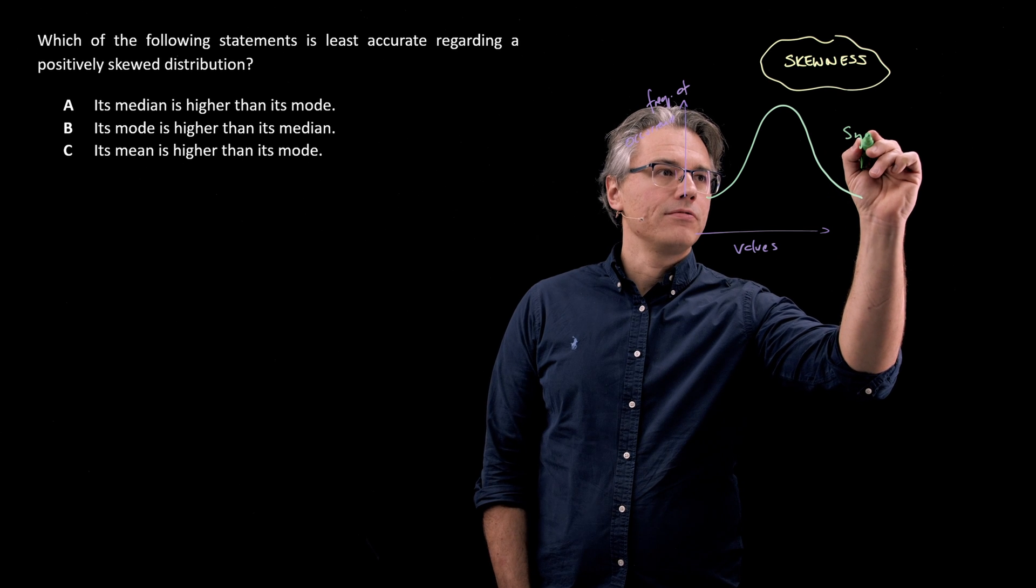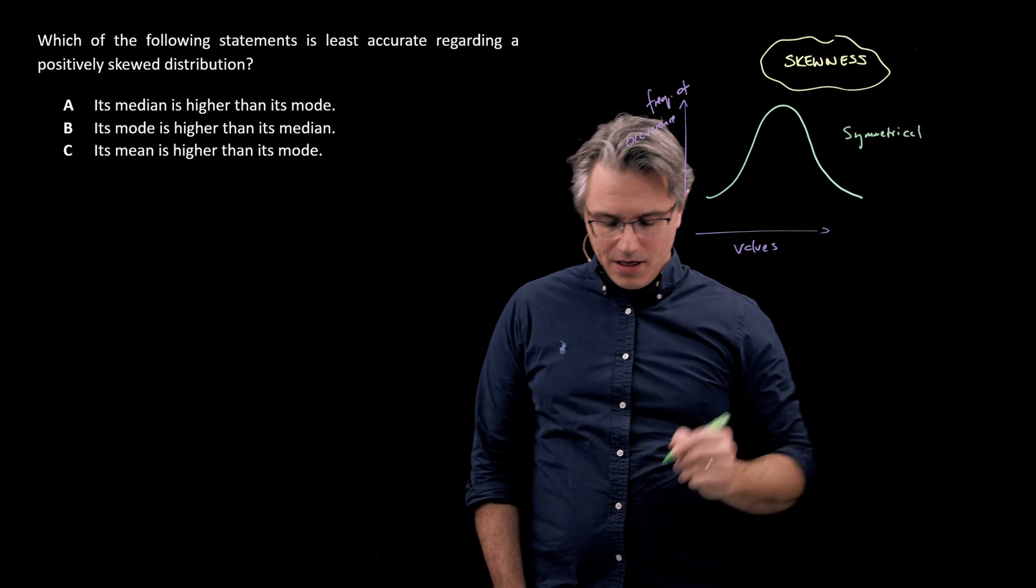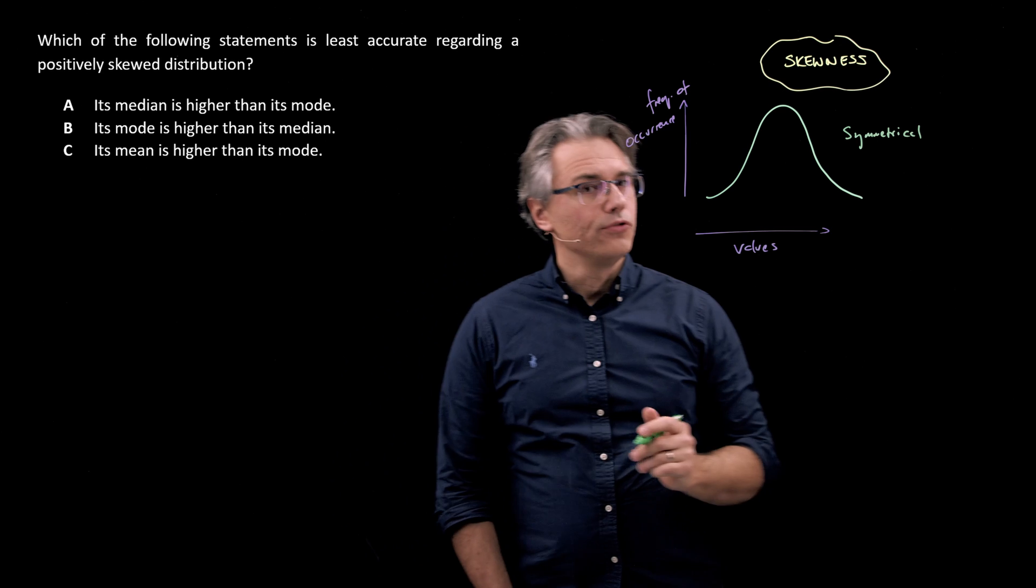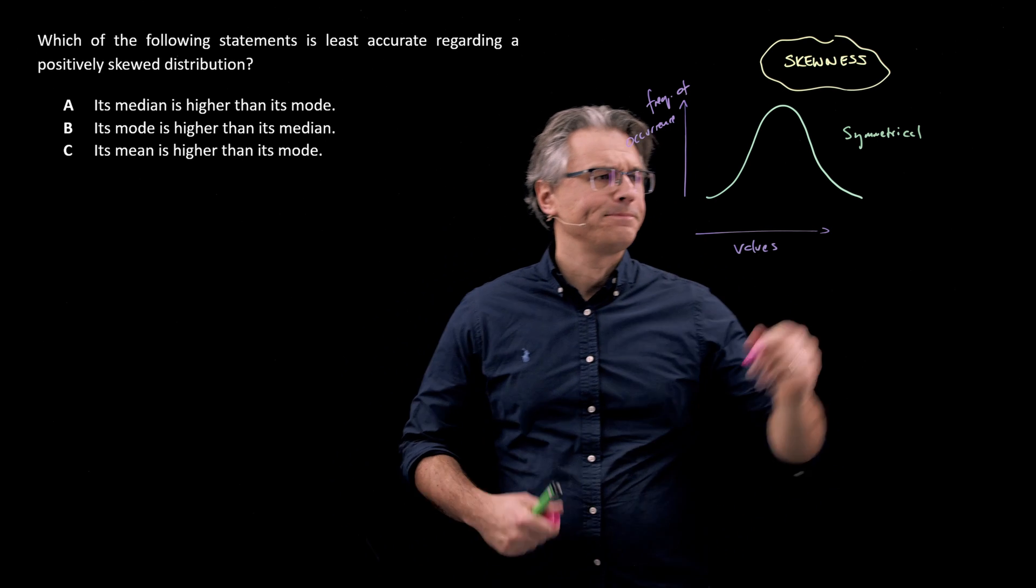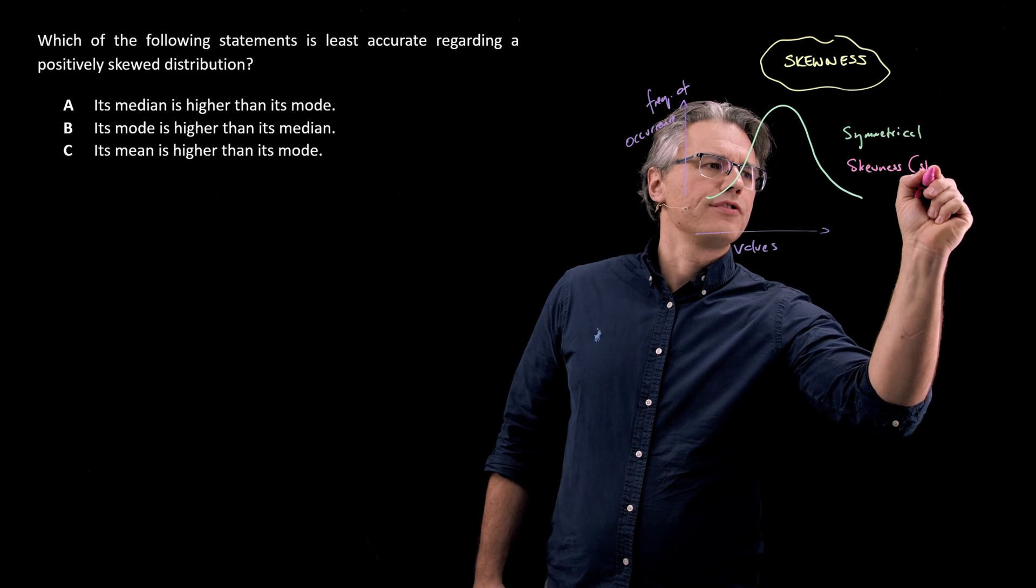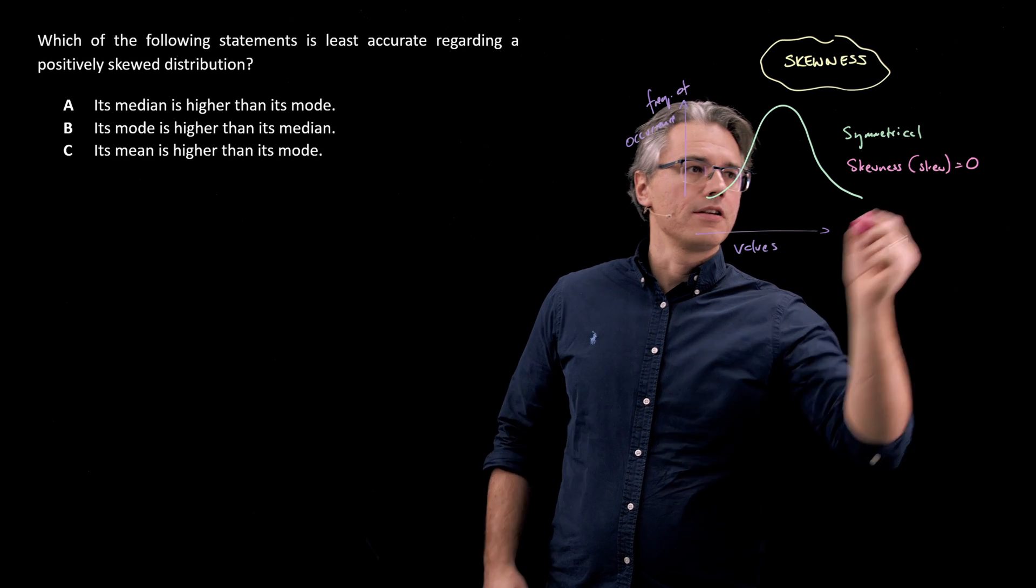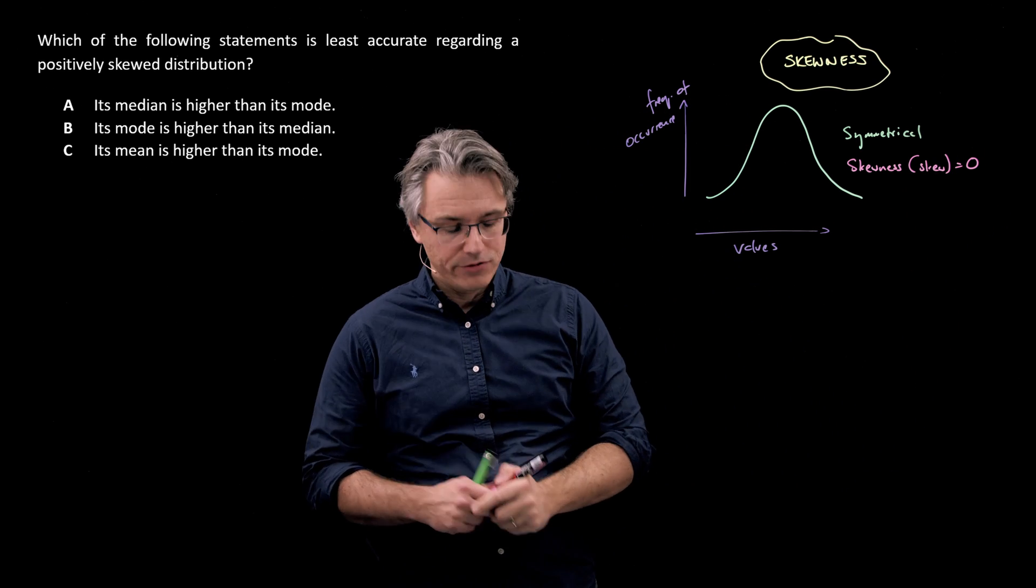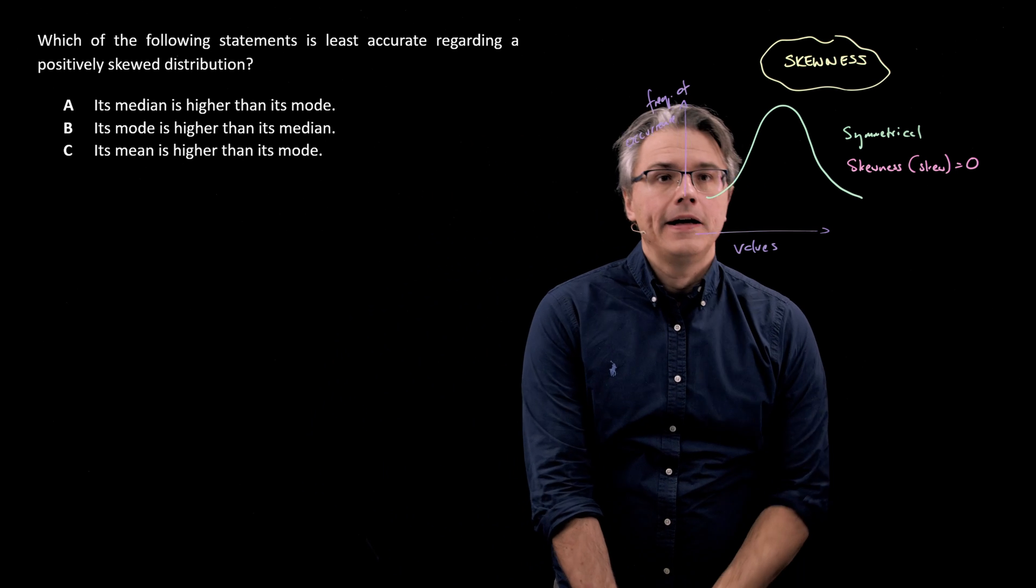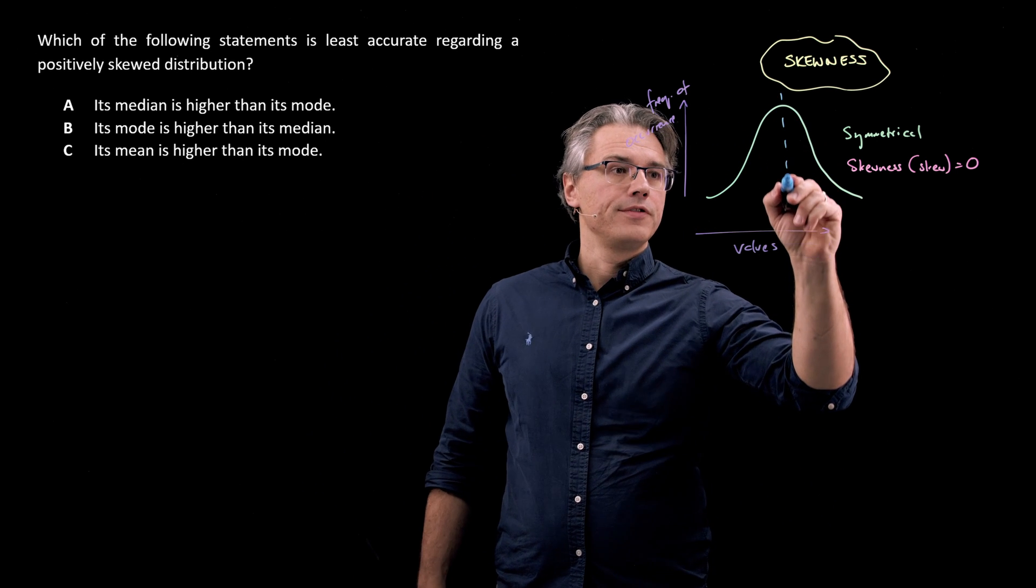So this is a symmetrical distribution, which means its skew parameter or skewness parameter - skewness or skew - is actually zero. A symmetrical distribution doesn't exhibit skewness, or it has a skewness of zero.